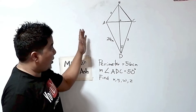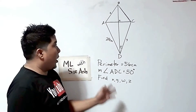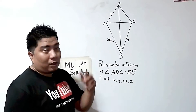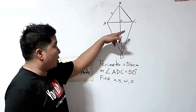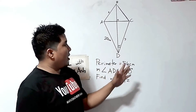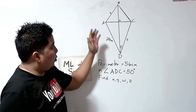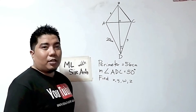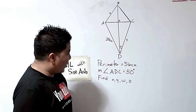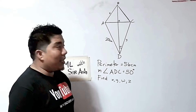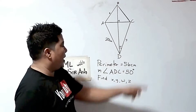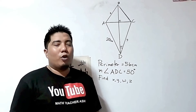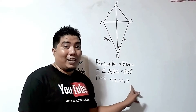We have here a kite ABCD where the diagonals intersect but the intersection point doesn't have a name. However, we have the variables X, W, Y, and Z as our unknowns. We are also given that the perimeter is equal to 56 centimeters and the measurement of angle ADC is 50 degrees. How do we get the value of X, Y, W, and Z?